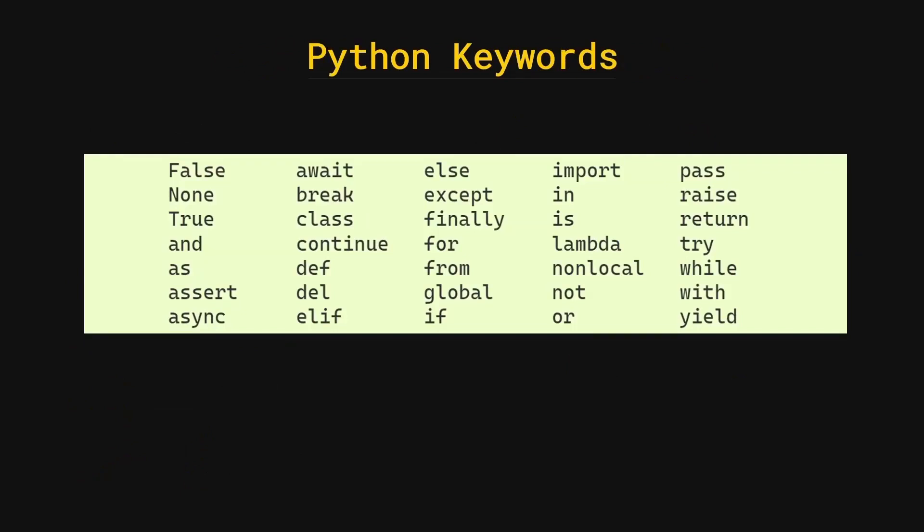These are the keywords in Python. Python keywords are a group of reserved words used for specific tasks in Python. For example, 'def' is a keyword, so you cannot use it as a variable name.